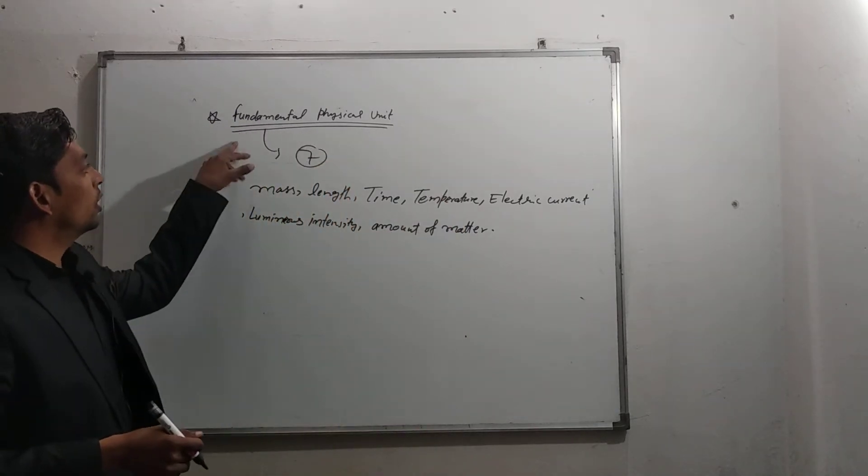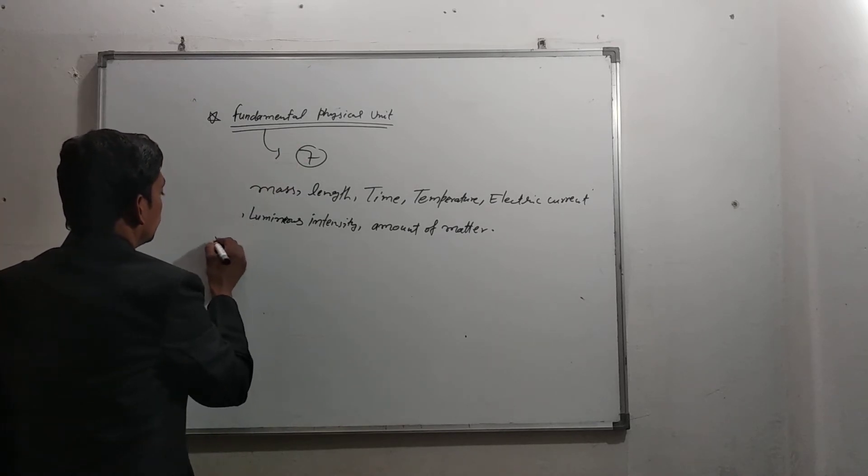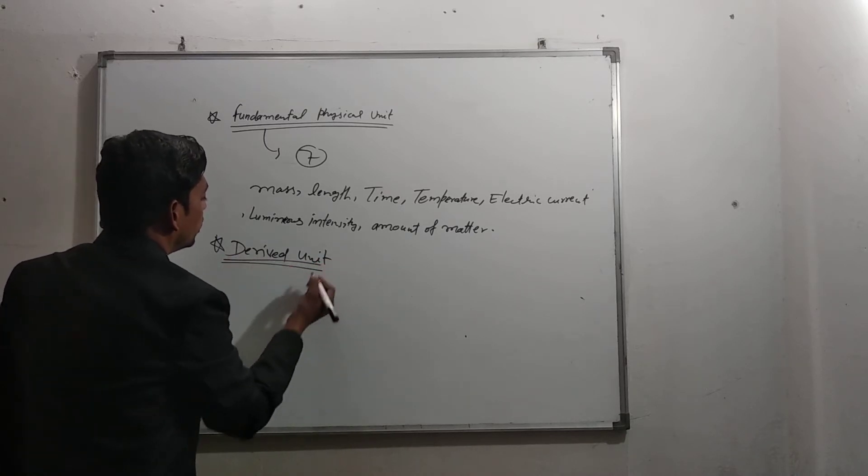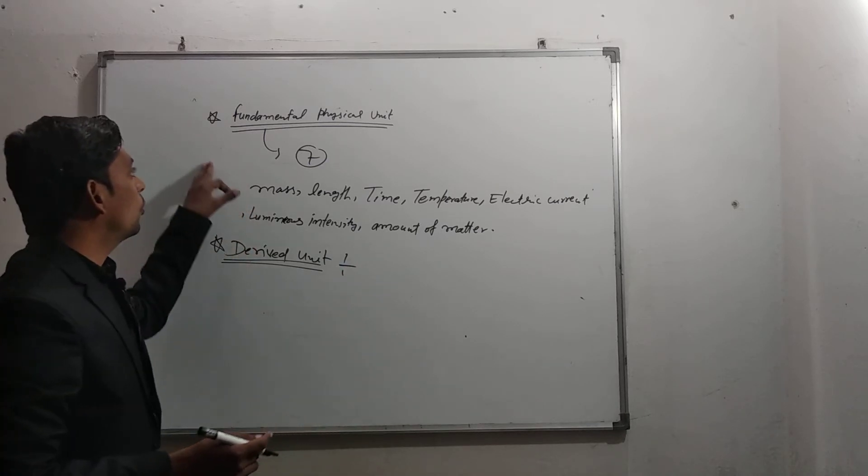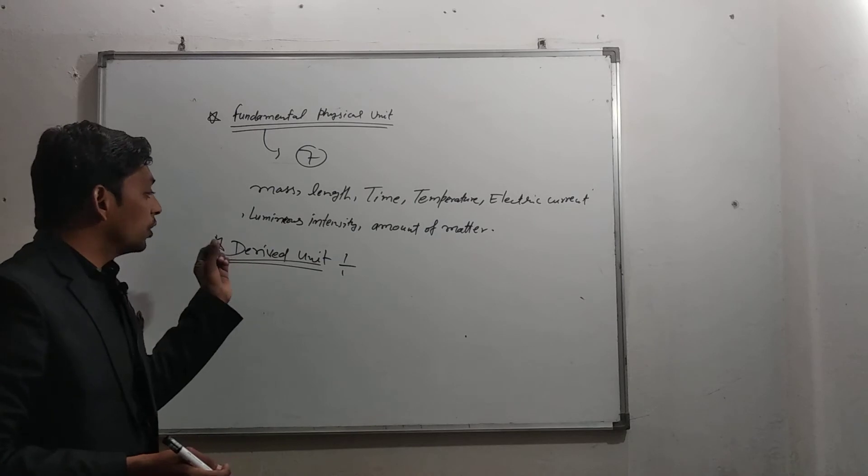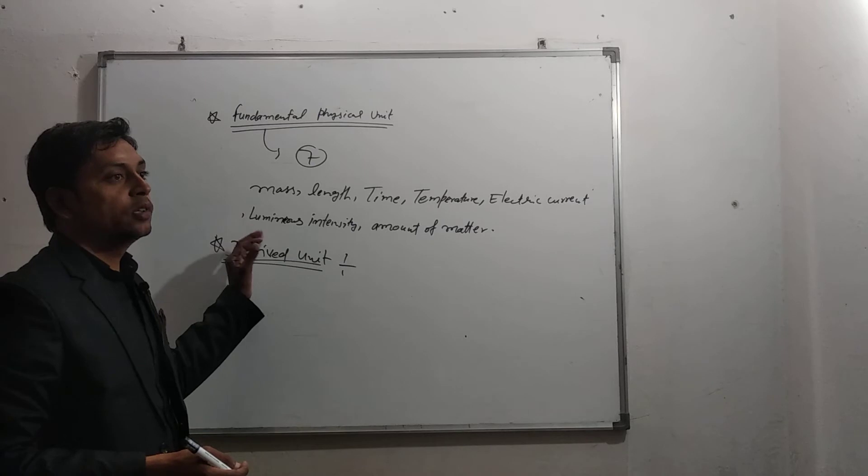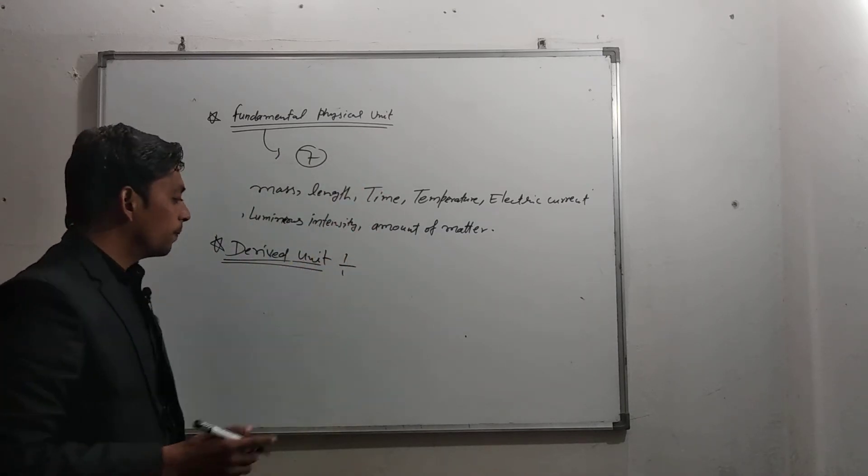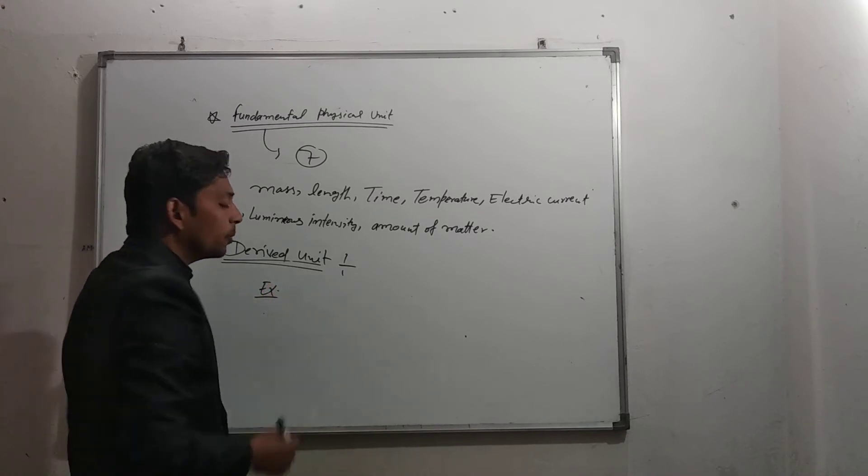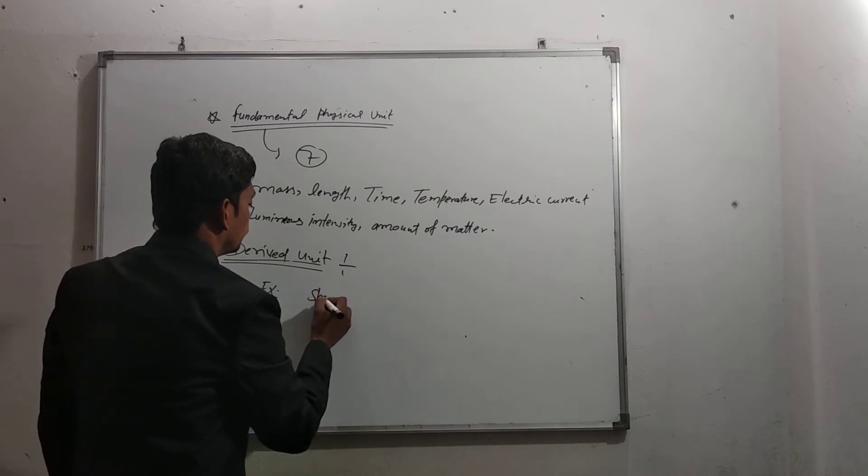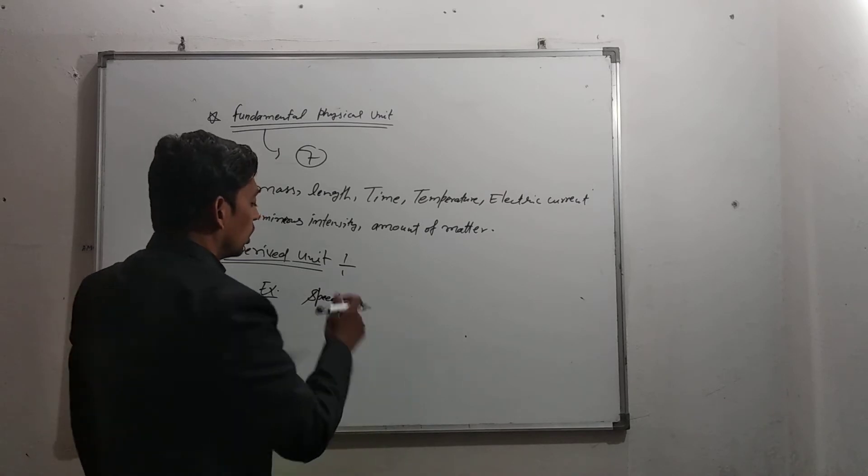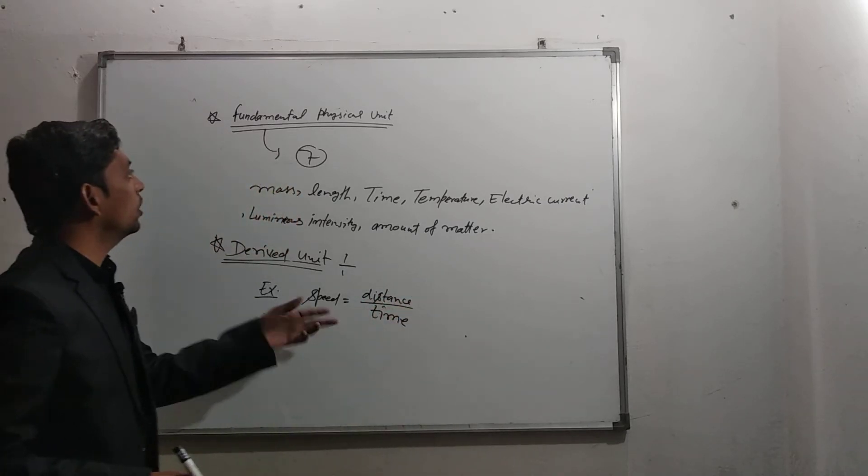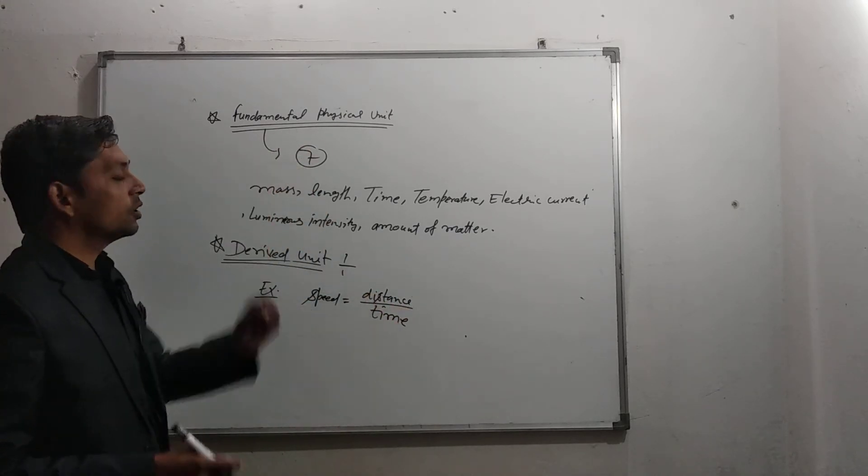This is the fundamental physical unit. In the same way, let's talk about derived units. What is the difference? Derived units can be defined using fundamental physical units. For example, speed is equal to distance upon time.